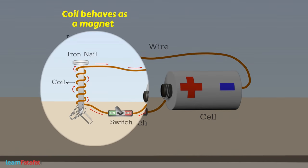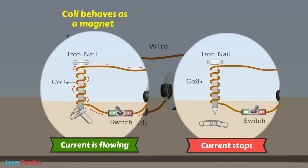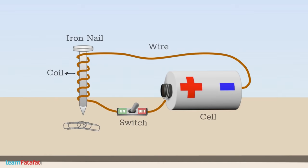Here, the coil behaves as a magnet when current flows through it. However, when the current stops, it loses its magnetism. Such a coil is called an electromagnet.